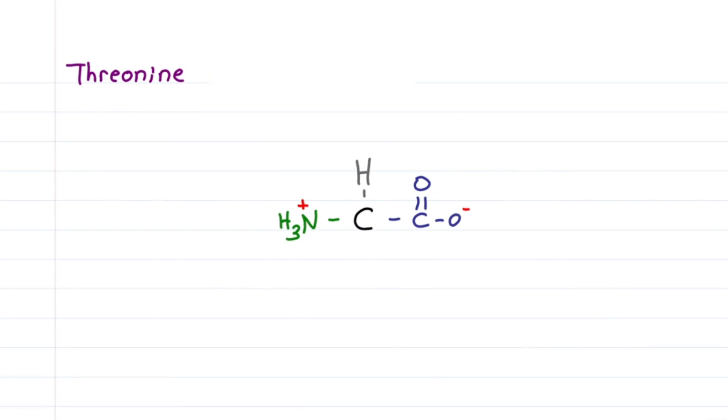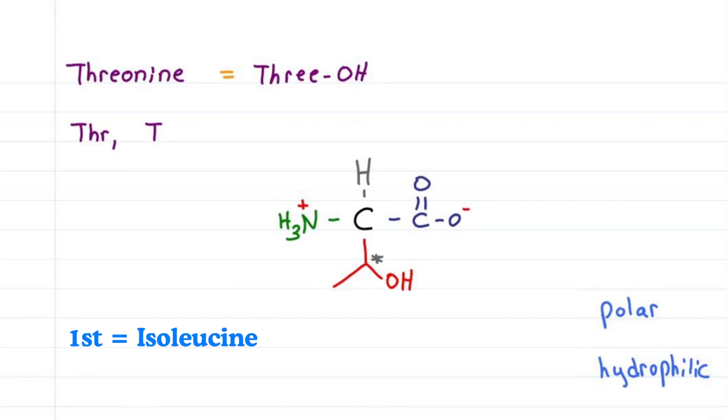For threonine, think 3-O-N-E. The first three letters are THR, first letter T, where the three tells me that I have three groups. Start with alanine, a methyl group, and then the O, the alcohol. The alcohol makes it polar and hydrophilic. Threonine is the second amino acid with a second chiral carbon.